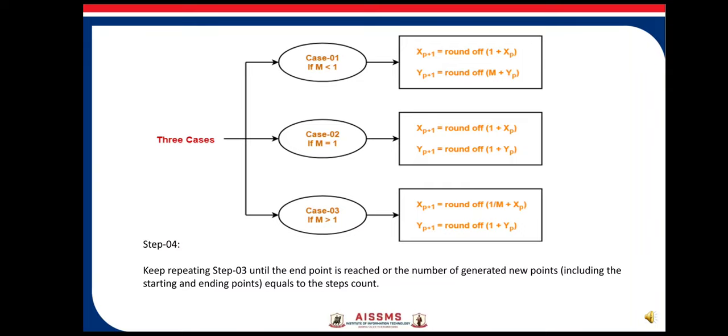Step 4: Keep repeating Step 3 until the end point is reached or the number of generated new points, including the starting and ending points, equals the number of steps. When the slope value is less than 1, greater than 1, or equals 1, we have to find out the x and y coordinates with the help of these equations, and we have to round off those values.